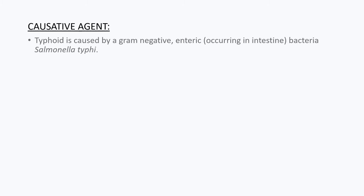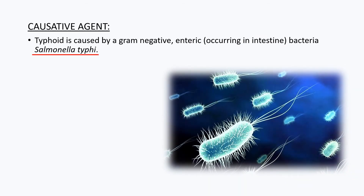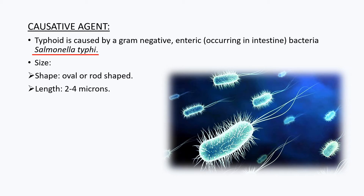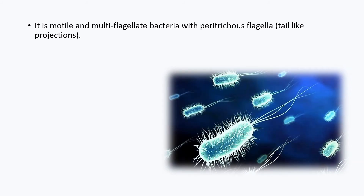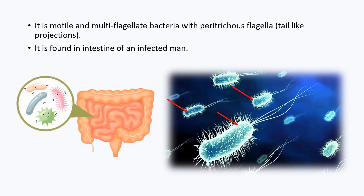Now let's know about the causative agent of typhoid. Typhoid is caused by a gram-negative enteric bacteria. Enteric bacteria are those which can affect mainly the intestines. This bacteria is known as Salmonella typhi. The shape of the bacteria is oval or rod-shaped, their length is 2 to 4 microns, and width is about 0.5 to 0.8 microns. These bacteria are motile and multiflagellate with peritrichous flagella, which means these bacteria have tail-like projections all over their surface. As these bacteria are enteric, they are mainly found in the intestine of an infected person.